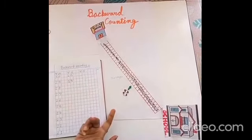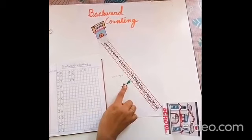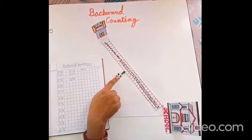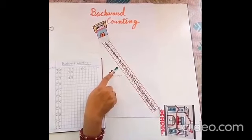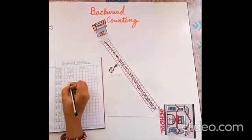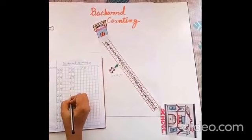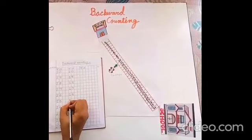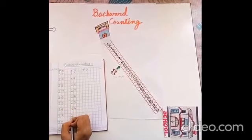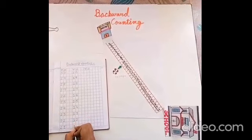Which number is next? Tell me children. Correct. Step number 18, then 17, 16, 15, 14, 13, 12, and 11. Let's write. 18, 17, 16, 15, 14, 13, 12, and 11.